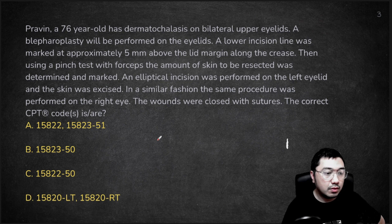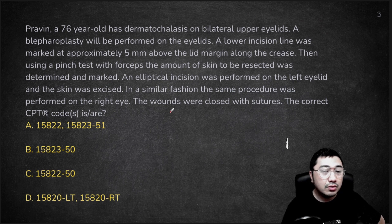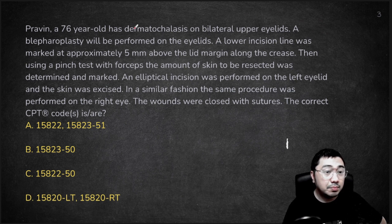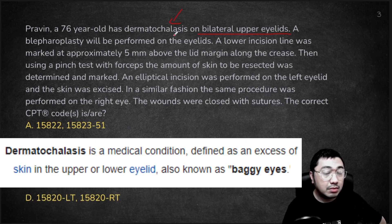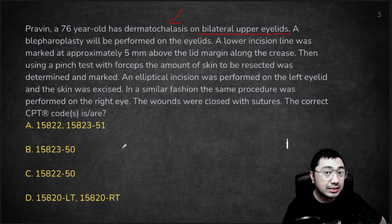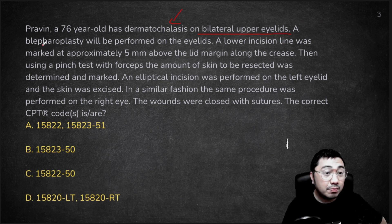Case number one. If you want to pause this video to answer the question first, you may do so. I'll be highlighting the important information in the scenario. Techniques vary — you can use your own technique or what your instructor has given you. So the patient is having a bilateral upper eyelids procedure due to dermatochalasis. You don't need to worry about the ICD codes here since none are listed. A blepharoplasty will be performed for both eyelids. Since eyelids is mentioned with an 's', you will be coding bilateral blepharoplasty.